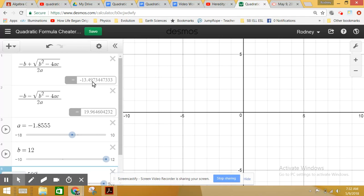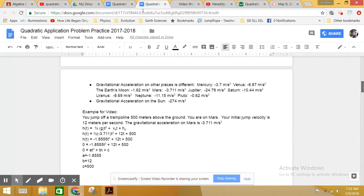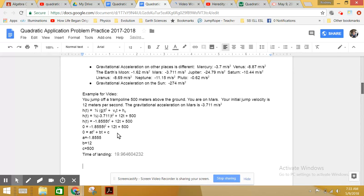So now we can figure out how long it took before we hit the ground. So we either have negative 13 point some long decimal, or 19.964. We're going to discard the negative one because that's in the past. We want to know about the future. So what we can figure out is that we're going to land a little under 20 seconds from now. So time of landing is approximately this number. So we would actually call it 20 seconds.